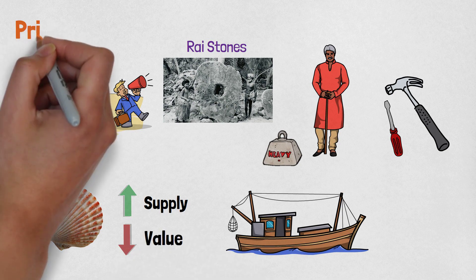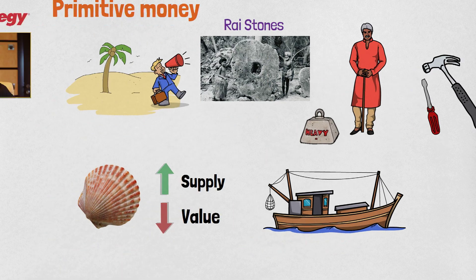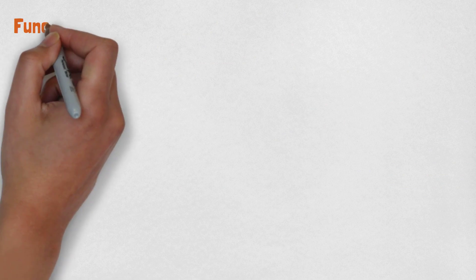Those were examples of primitive forms of money which had a problem keeping up with the developing world. There are three functions of money that need to be achieved in order to prosper in a civilization.